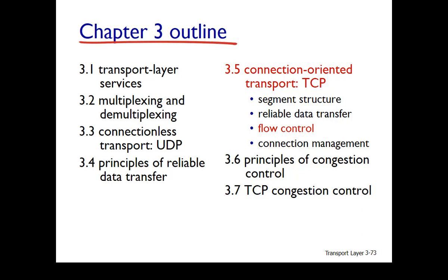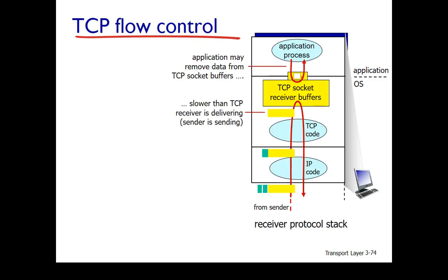In this video, I will talk about TCP's flow control mechanisms. On the receive side, you have your application process reading data out of the socket. Your receiving application may be reading data out of the receive buffers slower than the TCP sender is sending data.